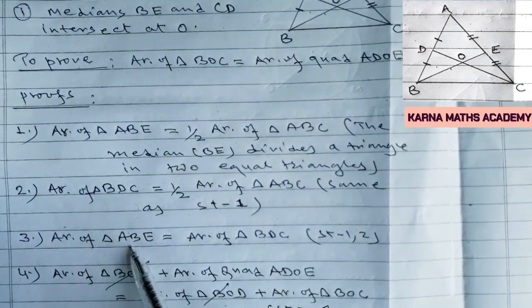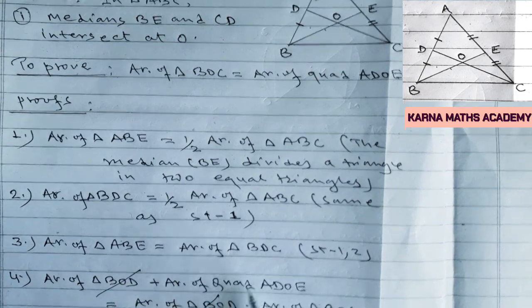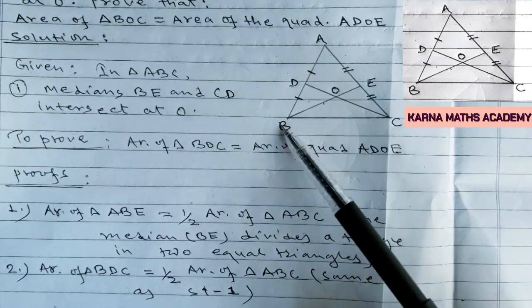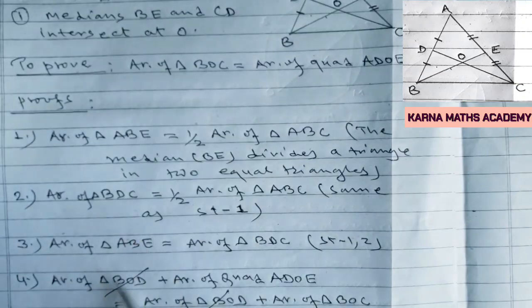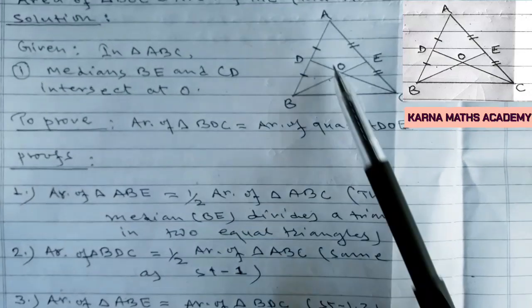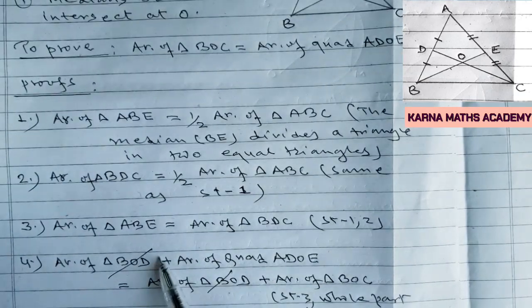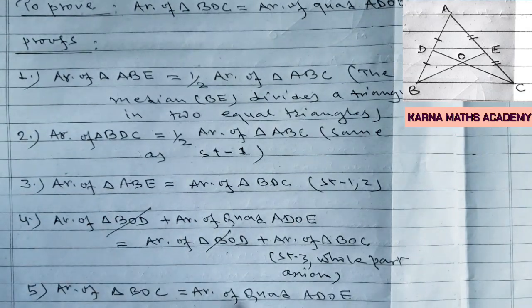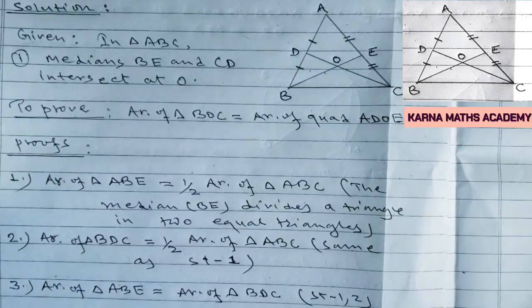Triangle ABE and triangle BDC both contain the common triangle BOD. Breaking triangle ABE into two parts gives triangle BOD plus quadrilateral ADOE. Breaking triangle BDC into two parts gives triangle BOD plus triangle BOC. Since both equal triangle ABE = triangle BDC, we cancel the common triangle BOD from both sides, and we easily get area of quadrilateral ADOE equals area of triangle BOC. This completes the proof of question number 24.